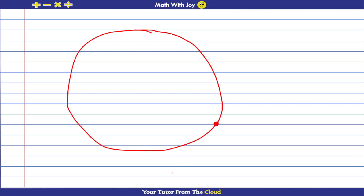Let's also imagine that there will be a straight line passing through that point. Let's call the straight line ST. Now this straight line ST touches this circle at a single point. That ST will be considered to be a tangent to the circle.